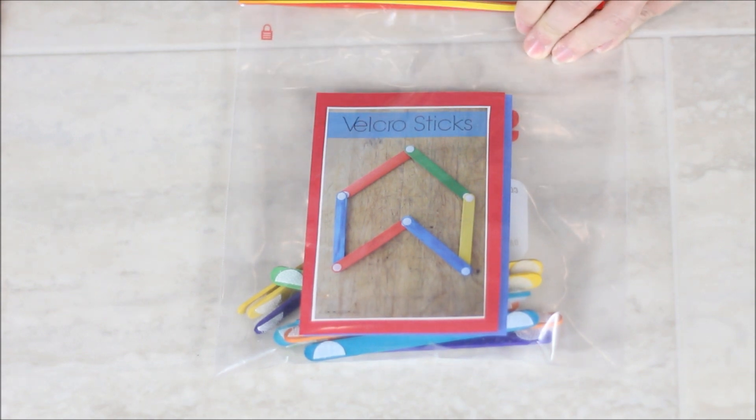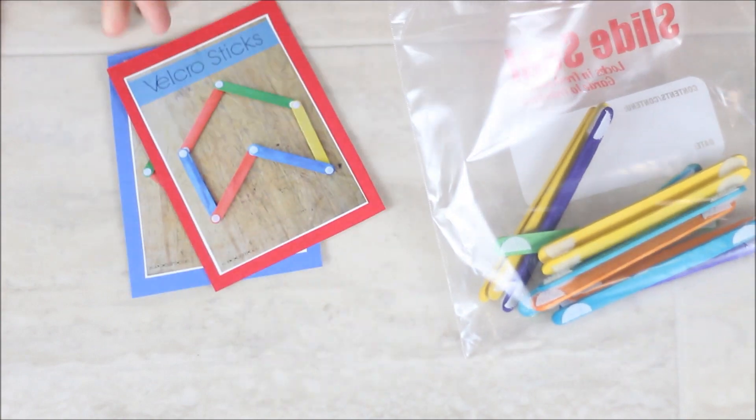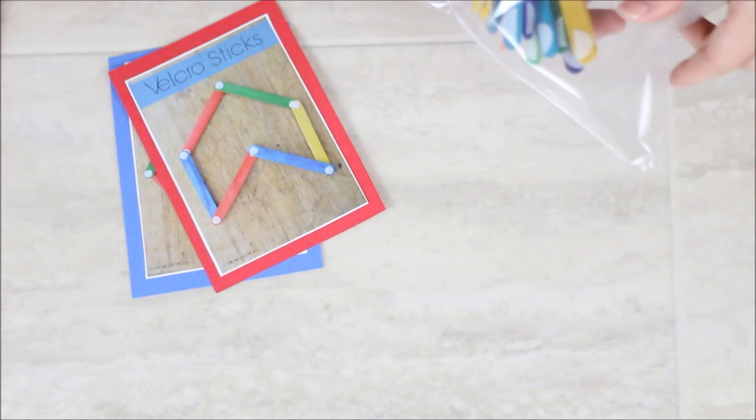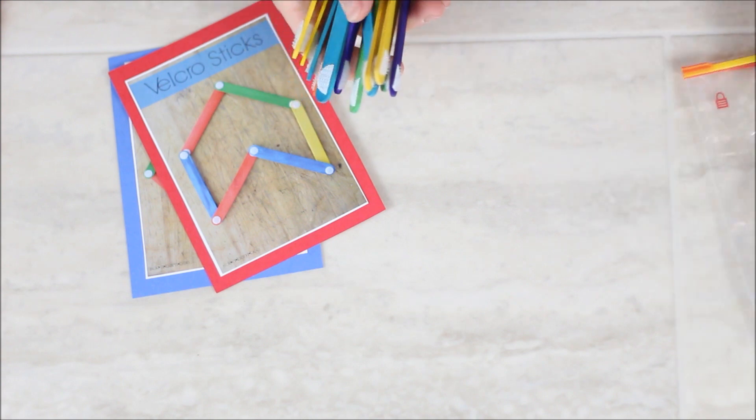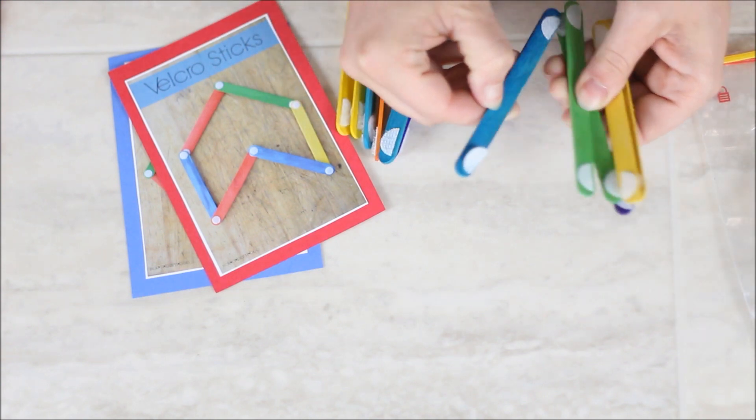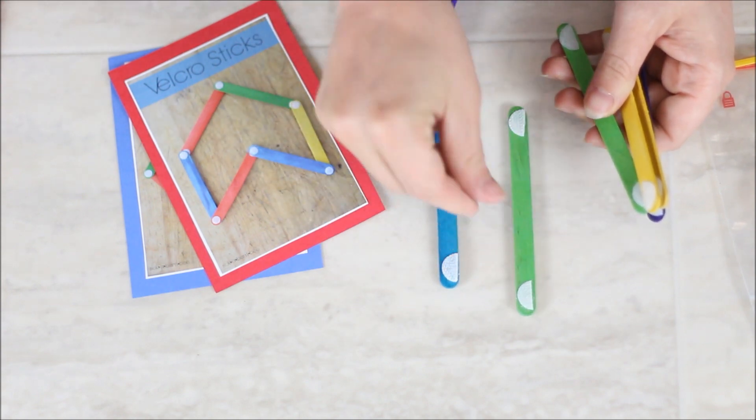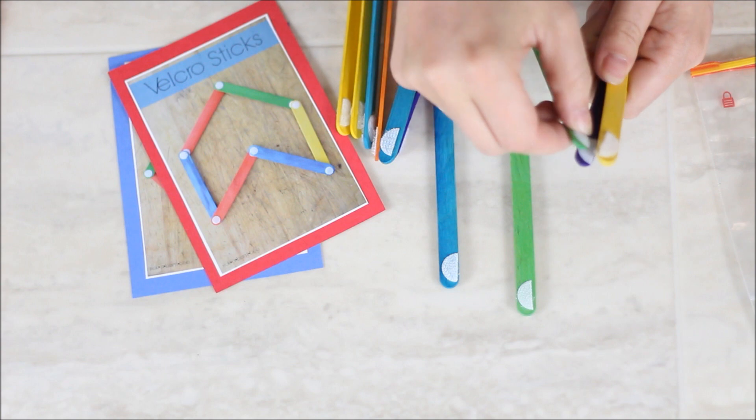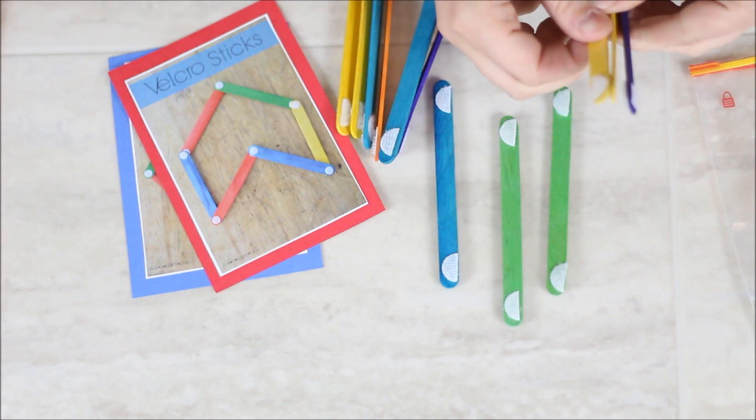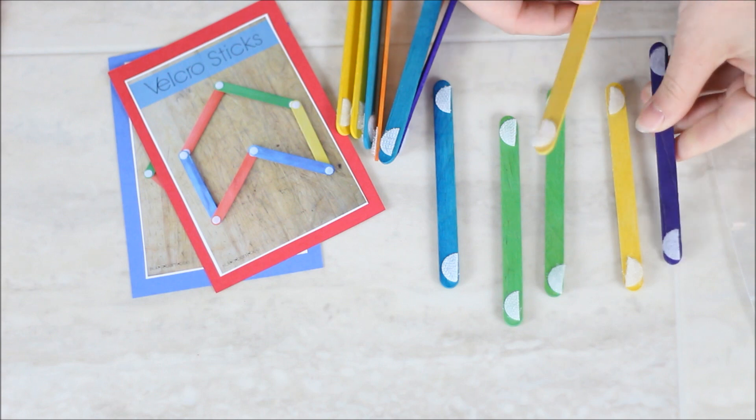It's really easy to make and it's perfect for both toddlers and preschoolers. What you need for this one is colored popsicle sticks—I found these at my local dollar store—and you need Velcro. Again, found Velcro dots at the local dollar store. What you do first is you cut the Velcro dots in half.